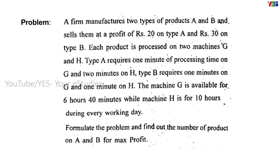To understand this, let us take a problem. A firm manufactures two types of products, A and B, and sells them at a profit of rupees 20 on type A and rupees 30 on type B. Each product is processed on two machines, G and H. Type A requires one minute of processing time on G and two minutes on H. Type B requires one minute on G and one minute on H. Machine G is available for six hours and 40 minutes, while machine H is available for 10 hours during every working day. The question is to formulate the problem and find the number of products of type A and type B the firm should manufacture for maximum profit.